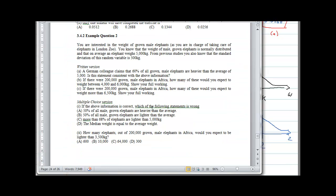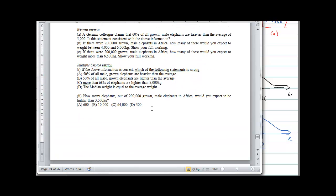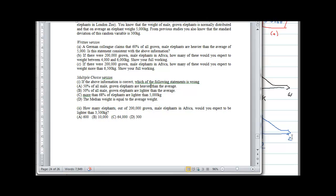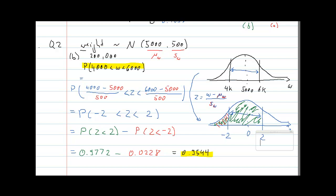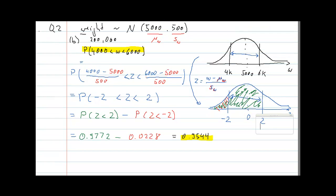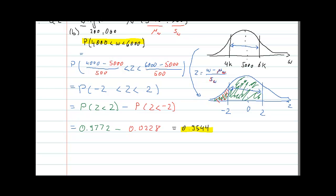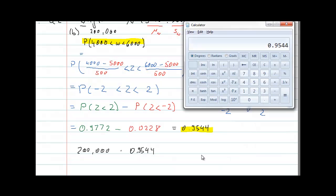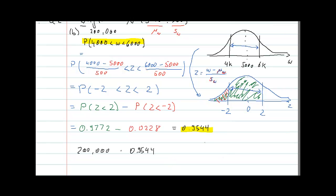That is the solution to part B. We expect 95.44% of the 200,000 elephants to be in that weight range, which is 190,880 elephants.